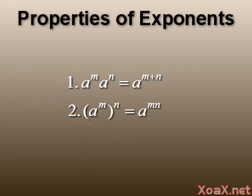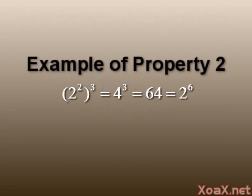For our second property, we have a to the m to the n equals a to the m times n. For example, 2 to the 2 to the 3 equals 4 to the 3 which equals 64 which is 2 to the 6.